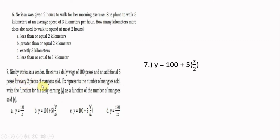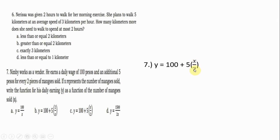Number seven: Nimby works as a vendor earning a daily wage of 100 pesos plus an additional 5 pesos for every two mangoes sold. If X is the number of mangoes sold, write the function for his daily earning Y. The function is Y equals 100 plus 5 times (X divided by 2).